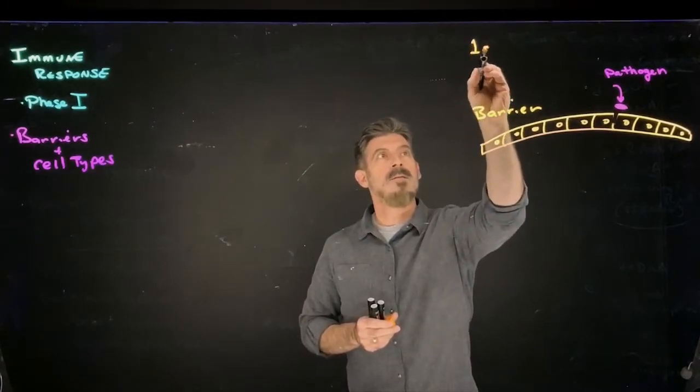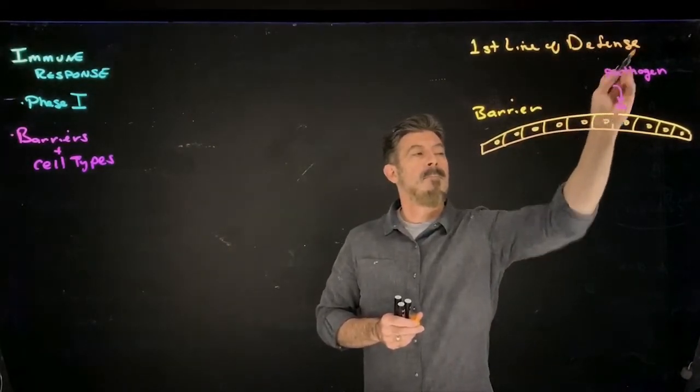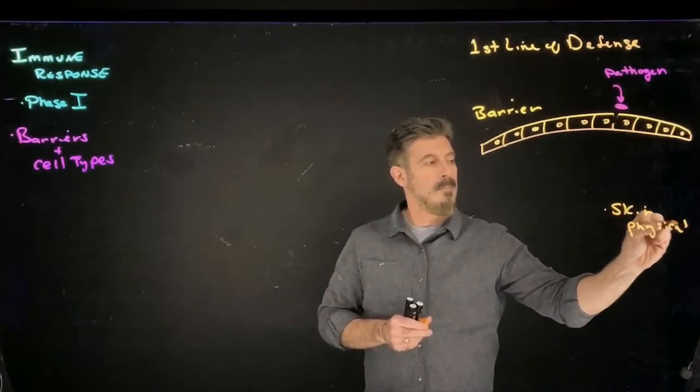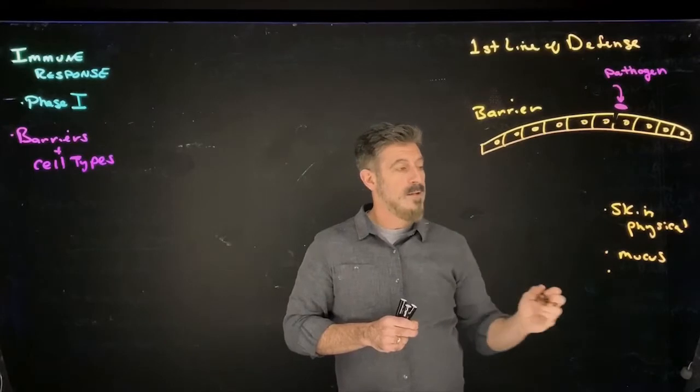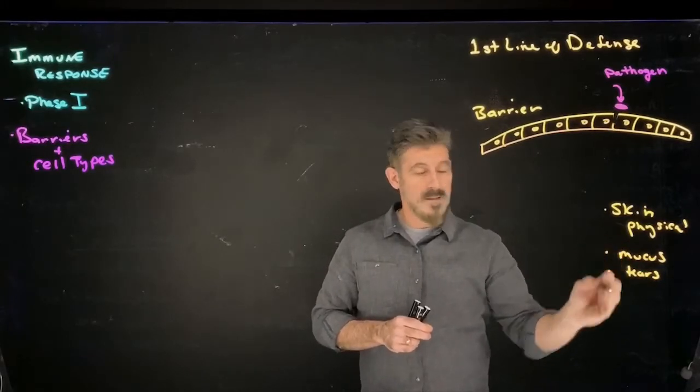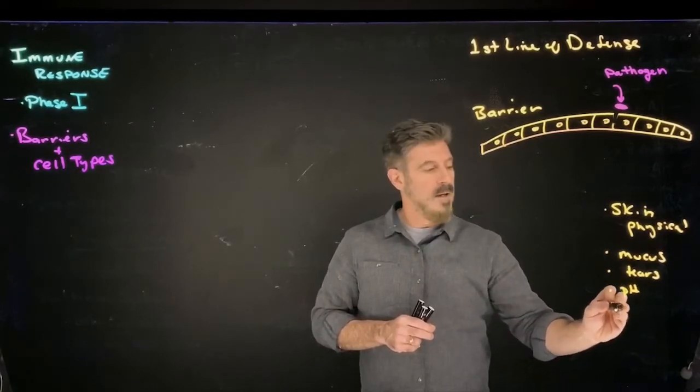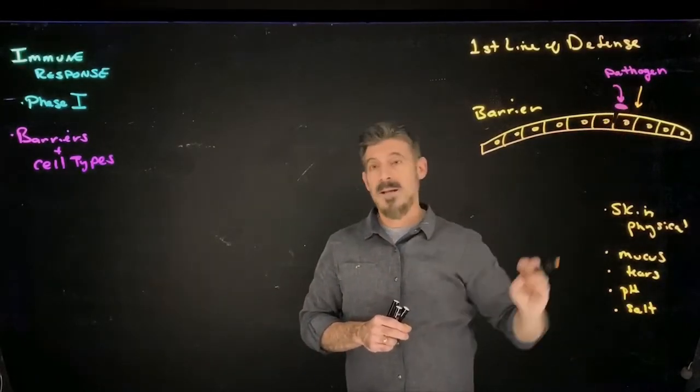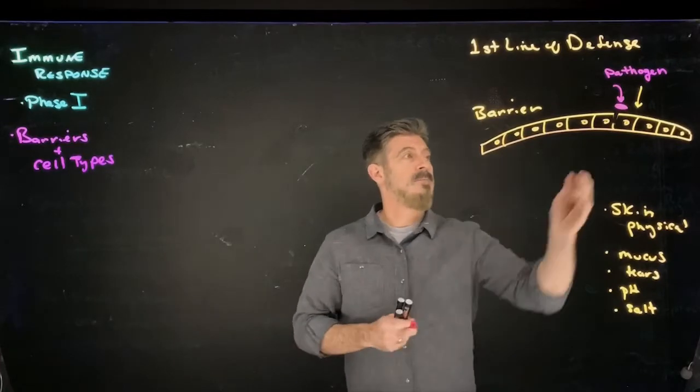So it's a first line of defense. Some of those barriers, like your skin, are physical. You have mucus in your nasal passageways, tears in your eyes. You also have on the surface of your skin, adding to the chemical nature of this first line of defense, the pH of the environment, salt, and all these things can prevent this pathogen from actually being able to cause any type of infection.